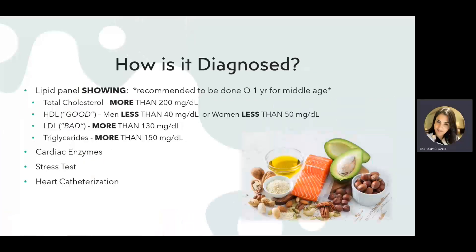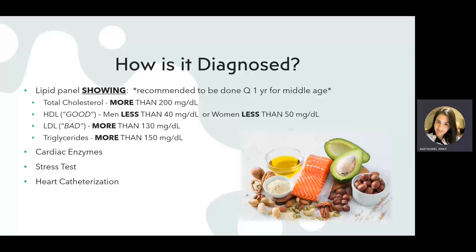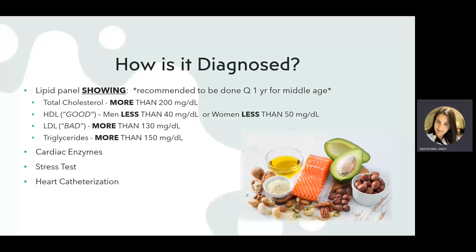So how do we diagnose it? We can diagnose it by doing a lipid panel. Let's talk about the lipid panel first, because that's the more common one done in your routine annual doctor's appointment. It's recommended that an individual gets a lipid panel every year once they reach middle age. When your lipid panel shows a total cholesterol of more than 200, that indicates higher risk or possible CAD.